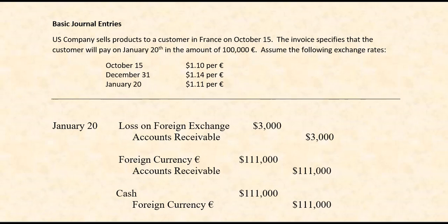Those are the basic journal entries for a U.S. company making a sale on credit where they allow the customer to pay in a foreign currency. Your textbook might combine some of these January 20th entries into one — do what your textbook or instructor wants you to do. And if you understood this example, you should be able to easily convert it into one where instead of selling products, the U.S. company is buying products and agreeing to pay 100,000 euros to some company in France. What's going to change is instead of dealing with a receivable, you'll be dealing with a payable.